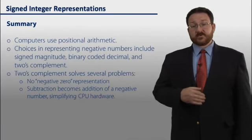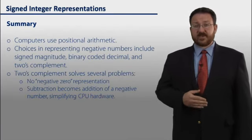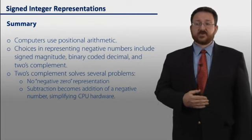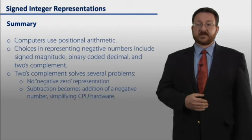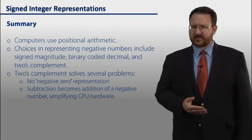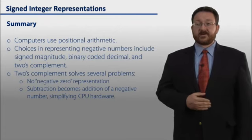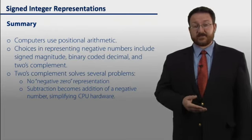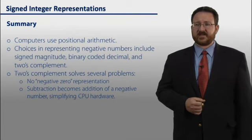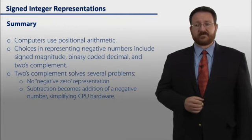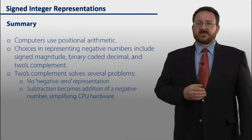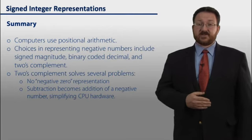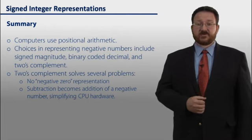In summary, computers use positional arithmetic in base 2 just like we use positional arithmetic in base 10. The choices in representing negative numbers include a sign-magnitude representation, but that has a problem with negative 0. Binary coded decimal, which has a problem of trying to represent a base 10 number, force a base 2 computer to work in base 10. And 2's complement, which solves both of those problems. So in that, we can unify subtraction and addition within the CPU hardware using 2's complement.